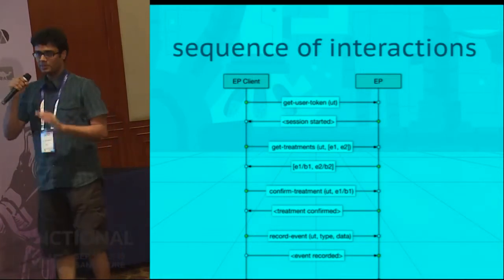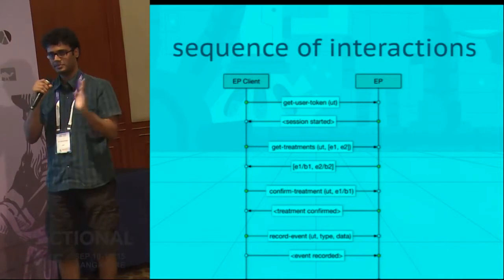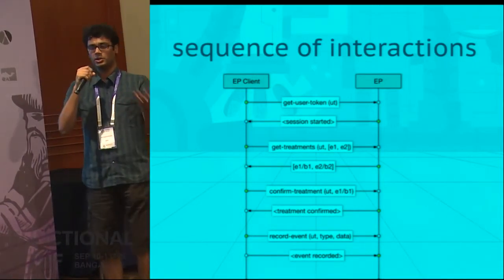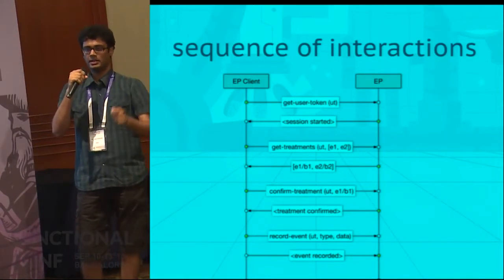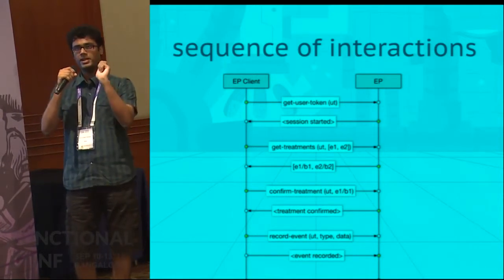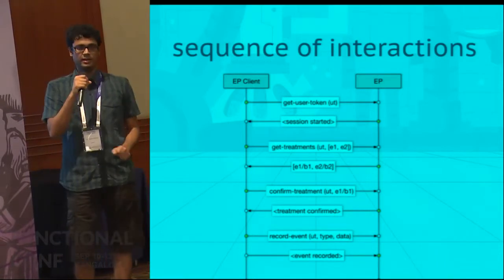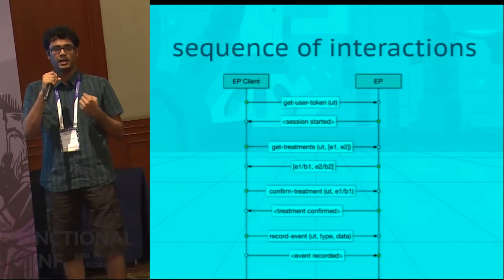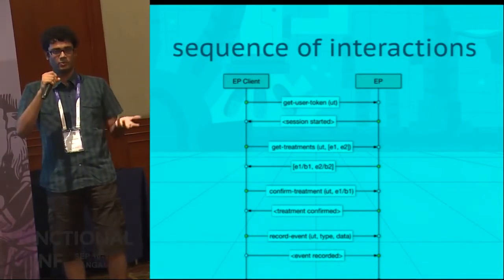Here is the sequence of interactions between the client and the experimentation platform. You say there's a new user and give us the session ID. Then you ask for treatments — say the checkout page experiment and the red-blue experiment — and we give you the buckets for that user. Then you tell us you actually showed the button to the user; that's the confirmed treatment call. Then if the user does something interesting like making a purchase, you let us know so we can measure it later — for example, how many sales dollars did one treatment generate over the other.